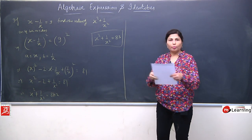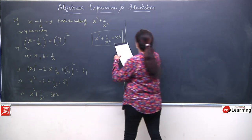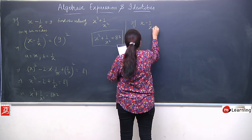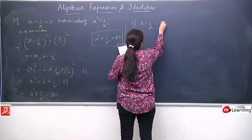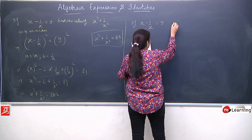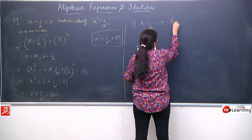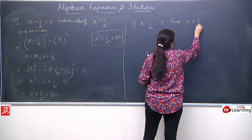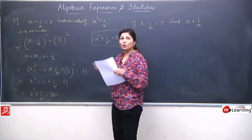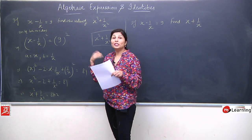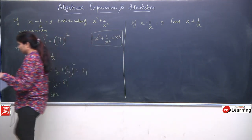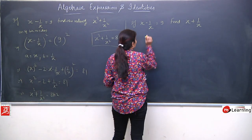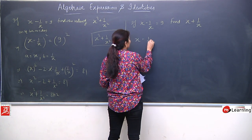We also solved the minus situation. Now if we have a different situation: if x minus 1/x equals 9, find x plus 1/x. This is something different — we need to find x plus 1/x, not its square. So we will square both sides and work from there.